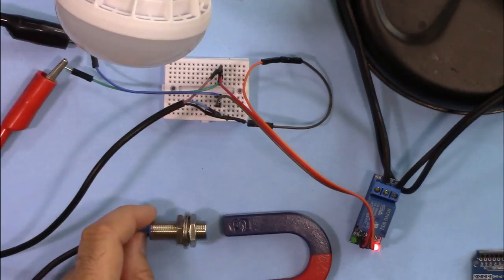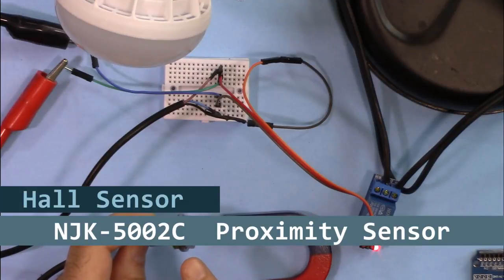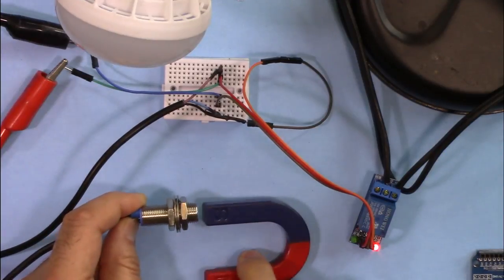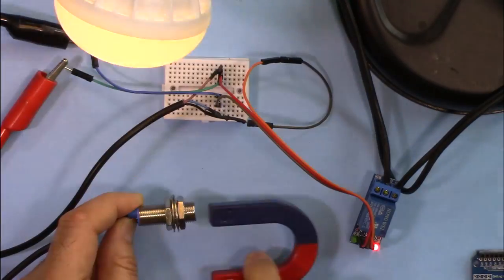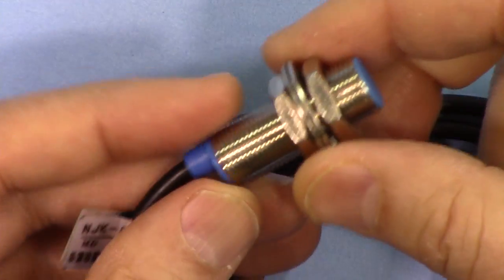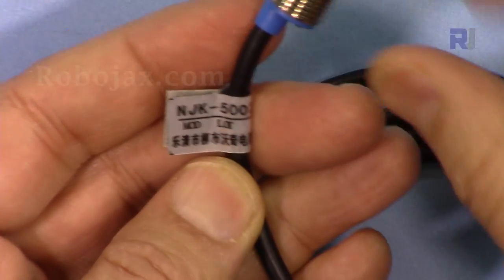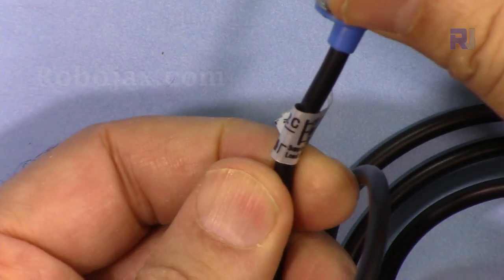In this video we are going to test the NJK-5002C Hall magnetic sensor to turn on and off an AC bulb using magnetic field detection.